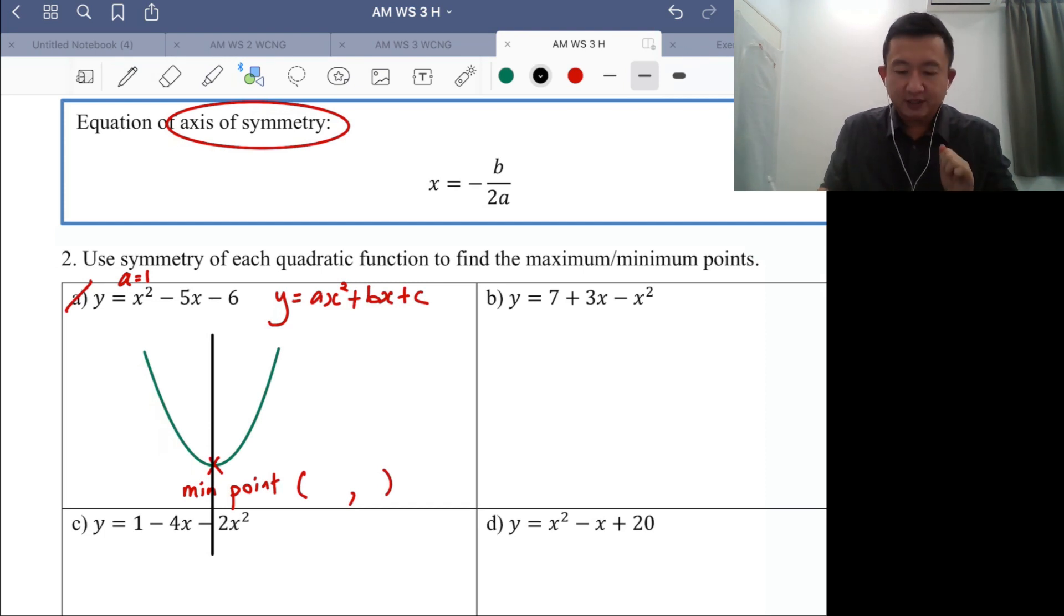But what is more important is, if I want to find the minimum point, the coordinate of the minimum point, I can utilize the equation of axis of symmetry. Because the formula is x equals negative b over 2a.